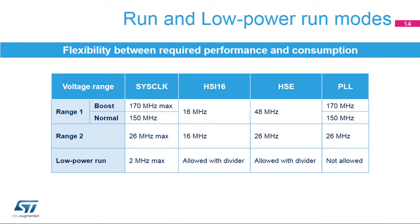The run mode, thanks to voltage scaling and the low-power run mode, offers flexibility between required performance and consumption. In run mode range 1, when boost mode is active, the system clock is limited to 170 MHz, and the internal and external oscillators and the PLL can be used. In run mode range 2, the system clock is limited to 26 MHz, and the internal and external oscillators as well as the PLL can be used, but must be limited to 26 MHz. In low-power run mode, the system clock must be limited to 2 MHz.